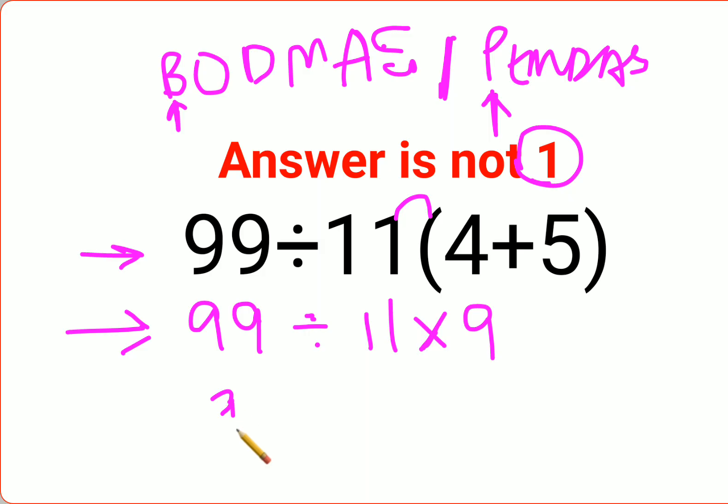a lot of people made the mistake that 99 divided by 11 into 9 is again 99. So the answer is supposed to be 1. Now, that is where a lot of people went wrong.